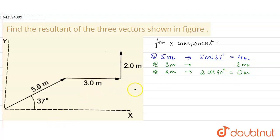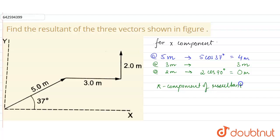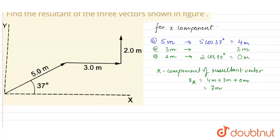Now, the x-component of the resultant vector — let us call it Xr — will be: 4 meters plus 3 meters plus 0 meters, which gives us 7 meters.